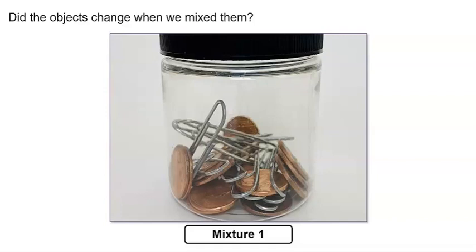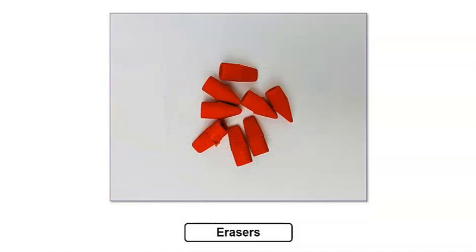Did the objects change when we mixed them? I don't think they did. Do you? Now let's change the mixture by adding another type of object. This time we will add erasers. But before we do, let's observe the properties of the erasers.